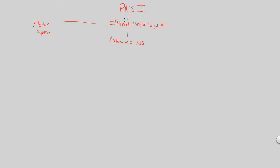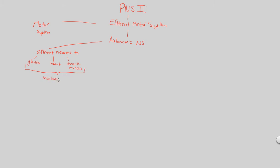The autonomic nervous system is a subcomponent of the efferent motor system, which is part of the peripheral nervous system. This part of the efferent motor system contains efferent neurons — much like the name implies — and these efferent neurons go from the central nervous system to effectors like the glands, the heart, and smooth muscles. These effectors are very much involuntary and are in control of involuntary actions — things that we don't need to think about. So we have efferent neurons to these associated structures within the autonomic nervous system.